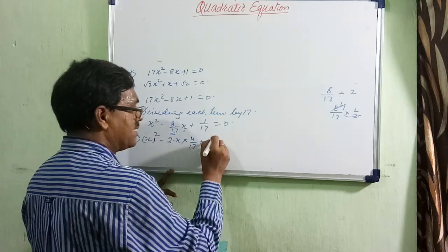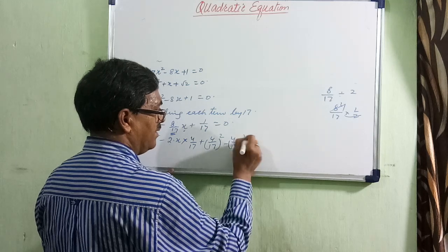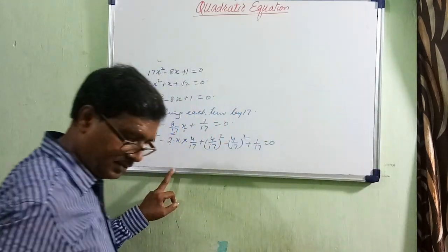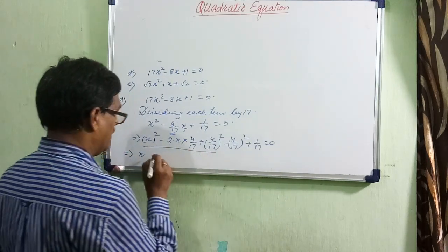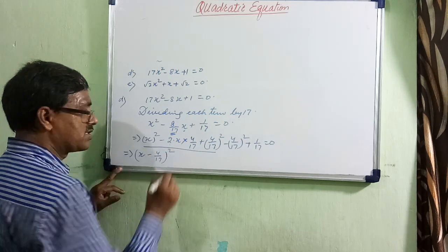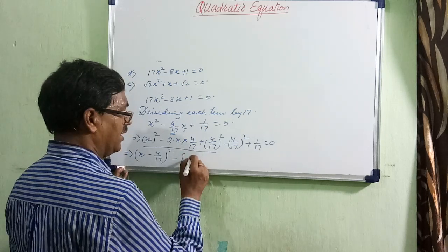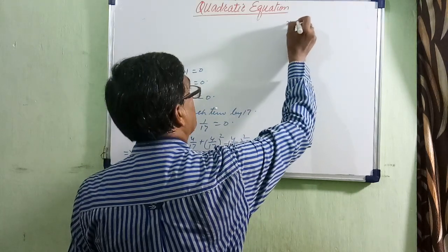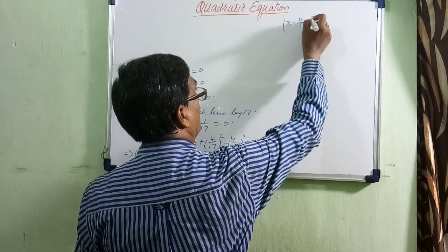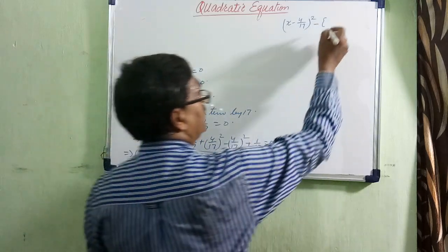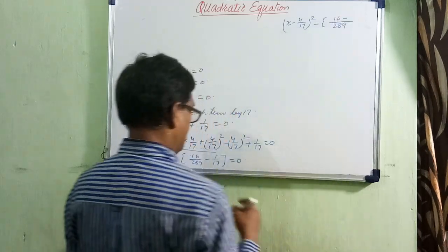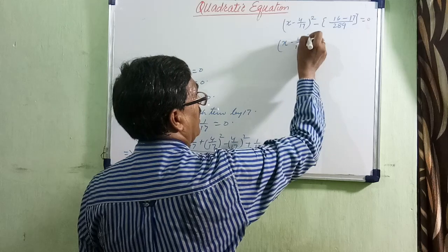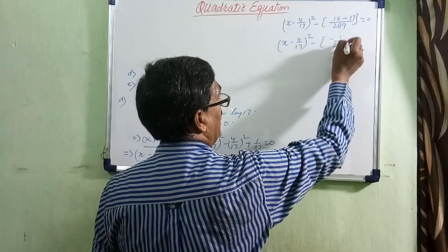We write it in the form a squared minus 2ab plus b squared, adding and then subtracting 4 by 17 squared, and keeping plus 1 by 17 equals 0. This gives x minus 4 by 17 whole squared minus the quantity 16 by 289 minus 1 by 17 equals 0. Simplifying, 16 by 289 minus 17 by 289 gives minus 1 by 289. So we have x minus 4 by 17 whole squared minus minus 1 by 289 equals 0.